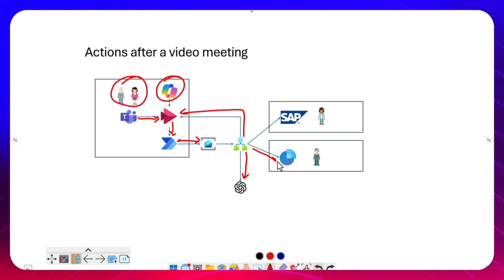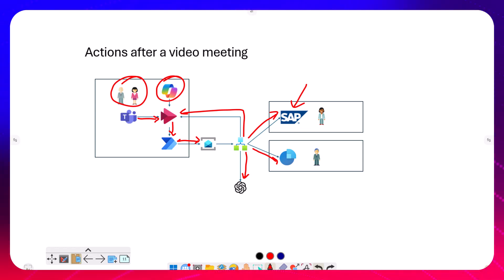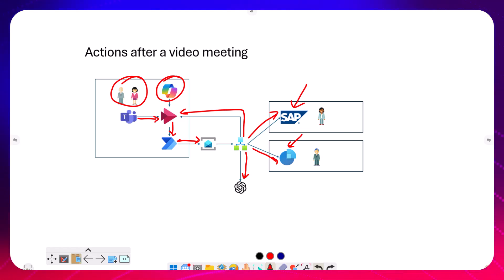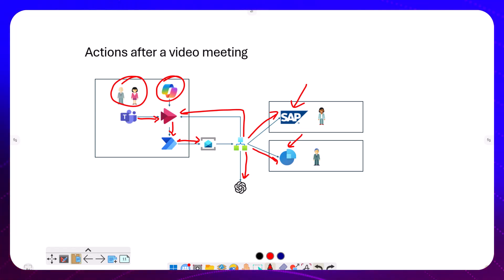From our integration platform we can then update various systems — maybe we indicate in the finance system the customer's at risk of churning so we can manage that from a finance perspective. Maybe in our sales system we create leads for new things the customer might be interested in, because there was expressed intent to learn more about a certain feature. And maybe we know from our product backlog they said they're interested in a certain problem — the OpenAI chat integration tells us if you're interested in this problem, we have this feature on our backlog that could solve it. We can register that as a sales lead. So we've taken that video and created leads from it, which would be quite cool.